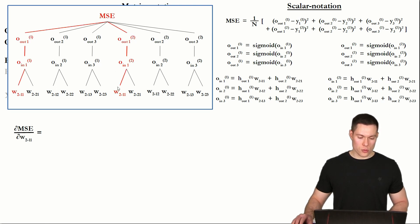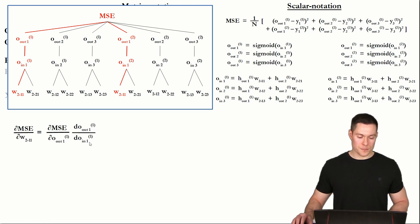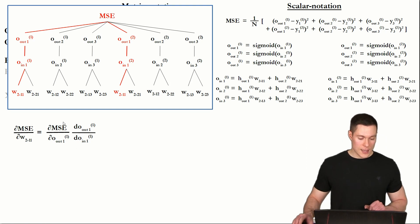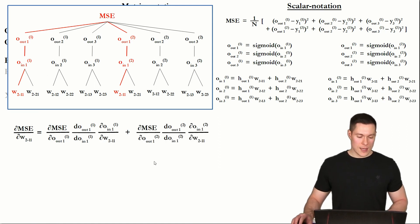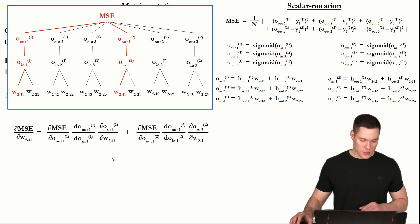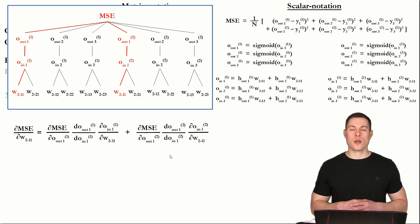To determine the partial derivative of the mean squared error with respect to weight 1-1, we consider those two paths from the tree diagram. We multiply the partial derivative of MSE with respect to O_out_1, times the derivative of O_out_1 with respect to O_in_1 (using the regular derivative since O_out_1 depends on only one variable), times the partial derivative of O_in_1 with respect to weight 1-1 — then add the second path. In the next video, we'll see what those individual expressions actually look like.